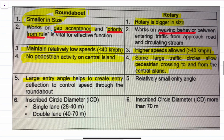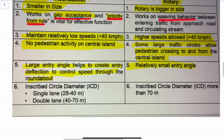A roundabout has a large entry angle to create entry deflection and to control speed through the roundabout, while the entry angle is relatively smaller in a rotary.